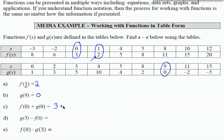Plus g of 0. There's the ordered pair I'm looking at. The output is 1. 3 plus 1 equals 4. That is my final result.